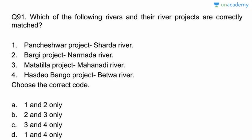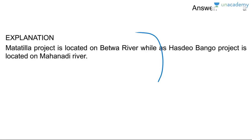Question ninety-one: rivers and their projects correctly matched. Pancheshwar Project on the Sharada River — correct. Bargi Project on the Narmada River — correct. Matila Project is on the Betwa River; Hasdeo Bango Project is on the Manoti River — these are crisscrossed in the question. Answer is A, one and two.